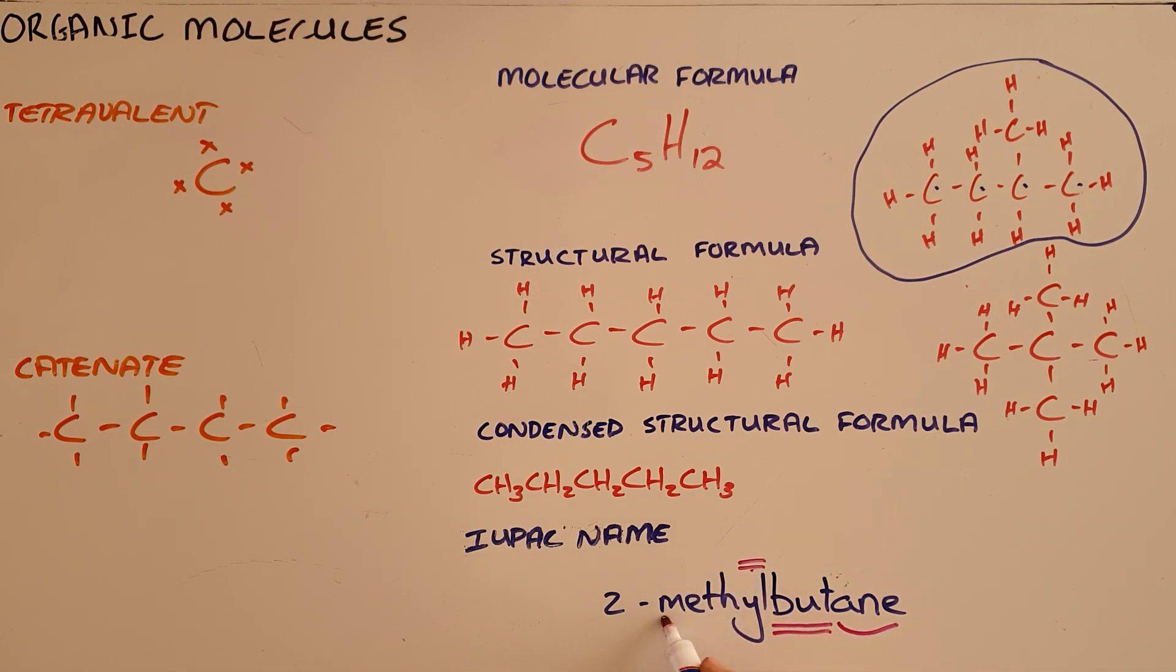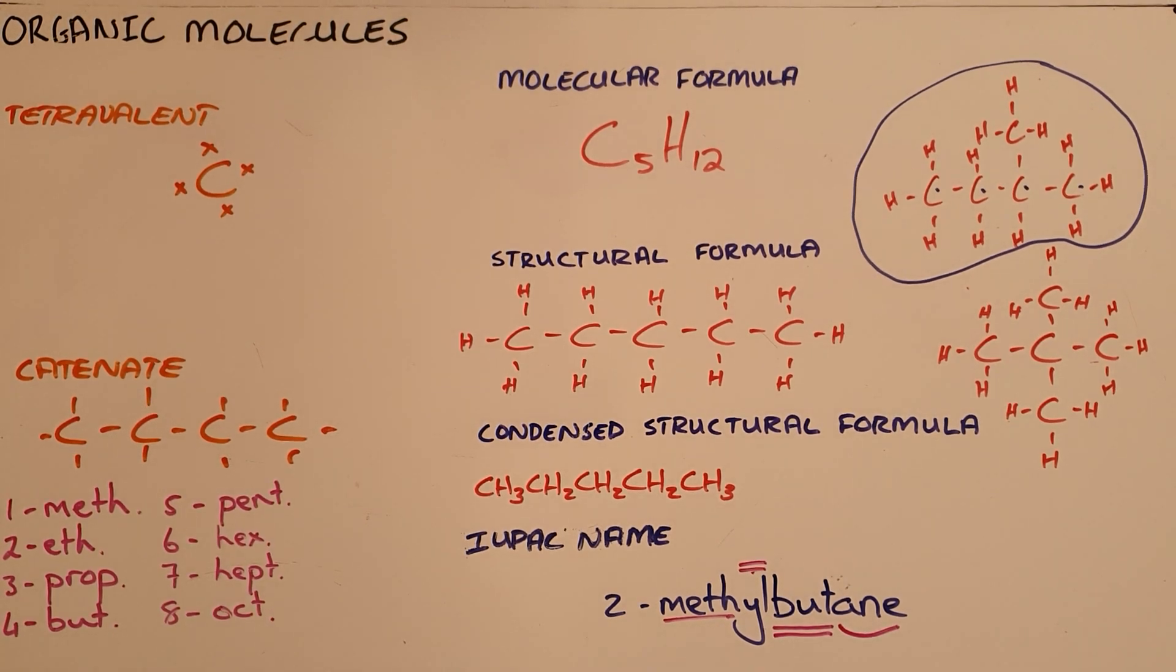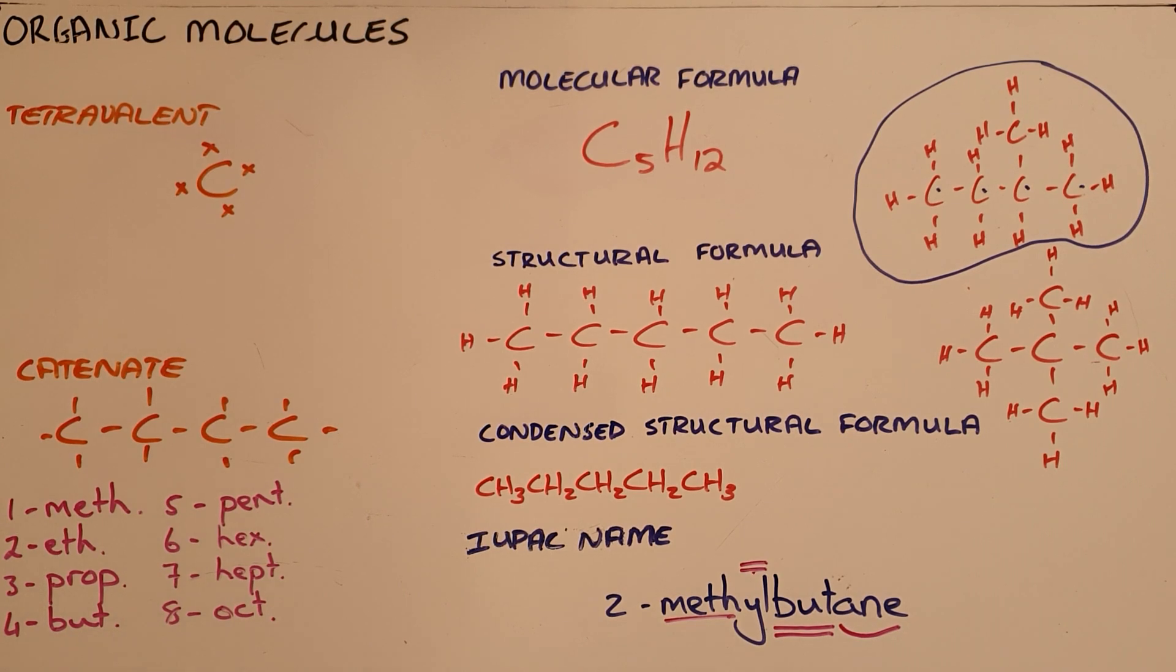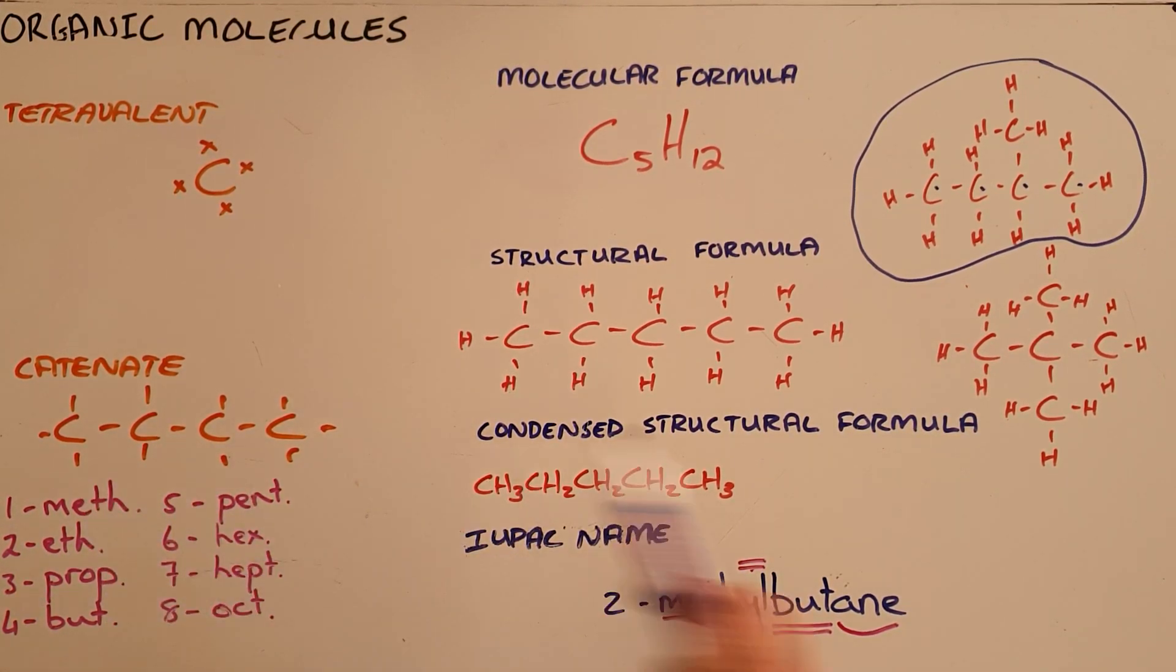In conclusion, organic molecules are molecules made up of carbon that catenate to form long chains. The chains are defined by the number of carbons, where a chain containing one carbon gets the prefix 'meth,' and here we can see the prefixes.